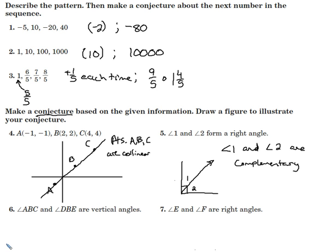Number 6. Angle ABC and angle DBE are vertical angles. So I'm going to draw a picture of vertical angles. Line, line, and apparently B here is in the middle. That is the point of intersection. And let's put A here. Let's put C here. So there's angle ABC.